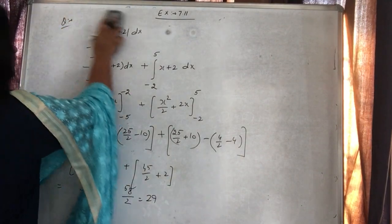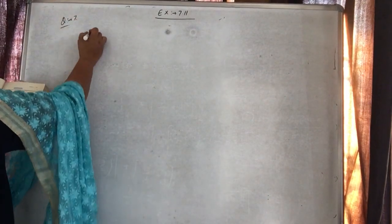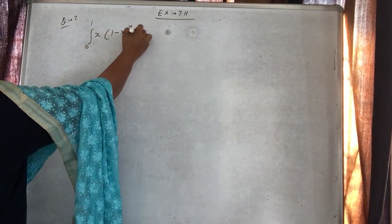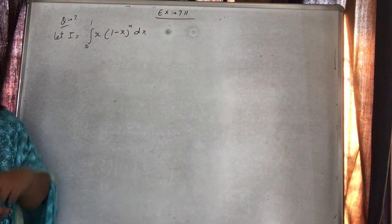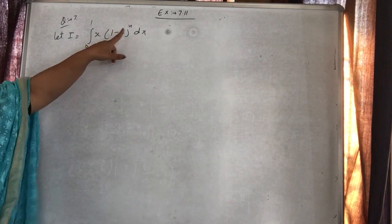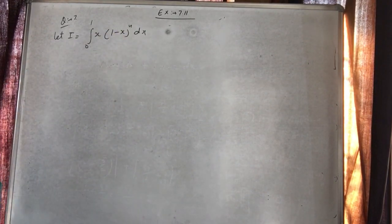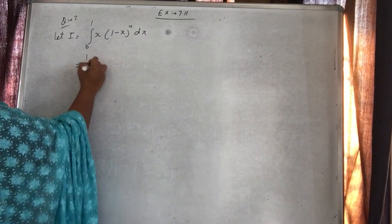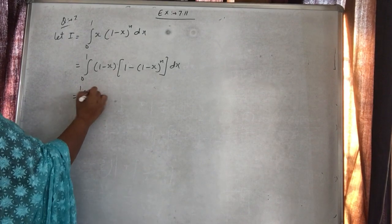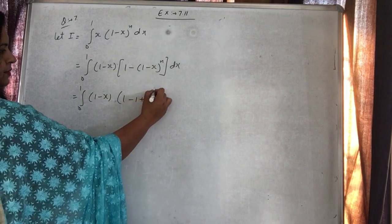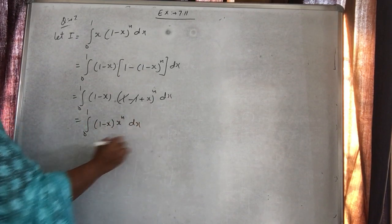Question number 7: integral of 0 to 1, x into (1 minus x)^n dx. Direct integrate hum nahi kar sakte. Kyun? Kyunki power n hai — square hota toh open kar dete, n hota toh andar multiply kar dete, lekin yahan we can't open it. Toh property lagayen: 0 to 1, x ko 1 minus x se replace karo (upper limit minus x). Toh (1 minus x) ki bracket open karein: 1 minus x into x^n. Ab add karein — directly integrate ho raha hai.